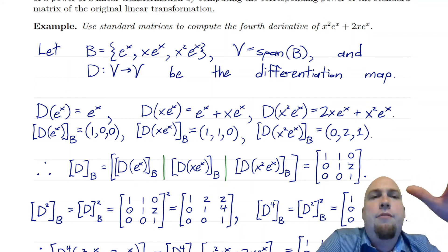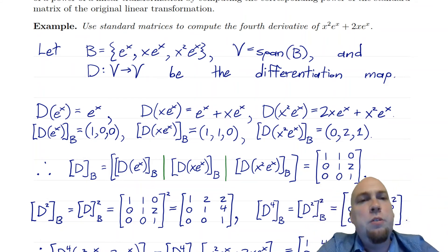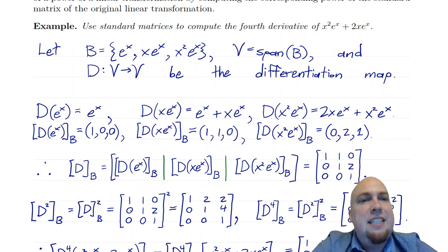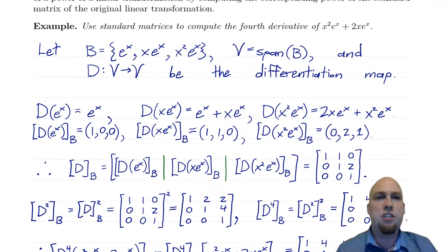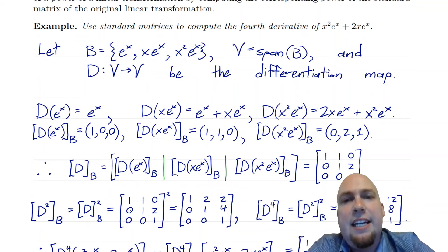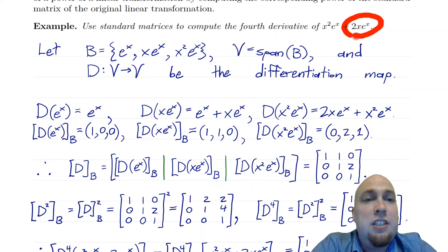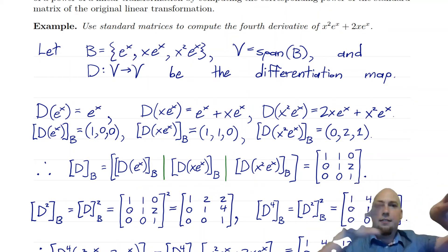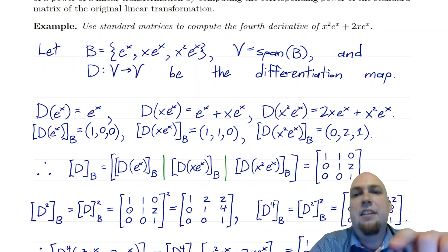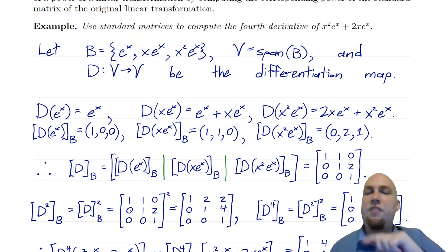The setup is we're going to work in some vector space with the derivative transformation on that vector space. The vector space we choose will consist of functions like x² eˣ, x eˣ, and things we get when we take derivatives of those. So we choose our vector space to be the span of three functions: x² eˣ, x eˣ, and eˣ. We throw eˣ in there because when we take derivatives using the product rule, we get eˣ terms on their own.